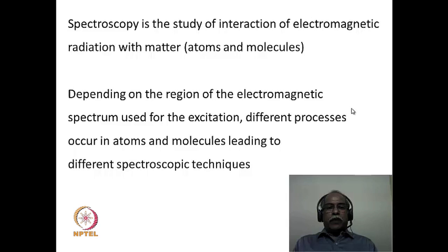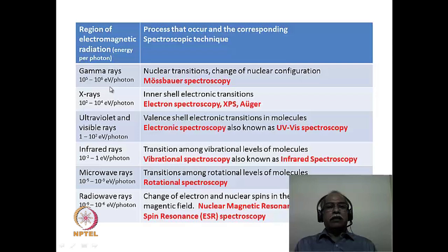Having defined spectroscopy, we now consider what processes take place in atoms and molecules depending on the region of the electromagnetic spectrum used, and what spectroscopic techniques correspond to various wavelength regions. This is defined in a particular table. Column one gives the region of electromagnetic radiation and energy per photon, from gamma rays down to radio waves. The corresponding processes in molecules and atoms are listed, along with the spectroscopic techniques shown in red.